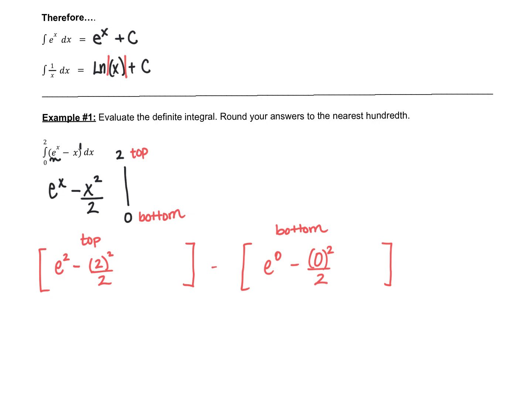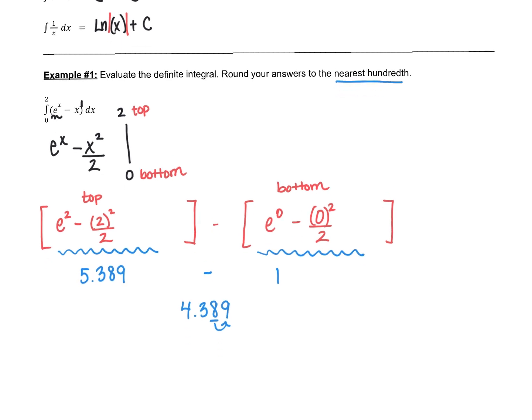These directions say round to the nearest hundredth, so you won't be able to put your answer in fraction form, especially now that we have an e. Pause the video, type each part into your calculator, then resume. For the first bracket I got 5.389 minus 1. When you subtract them, you get 4.389. Rounding to the nearest hundredth — two decimal places — the 8 looks at the 9, so the final answer is 4.39.